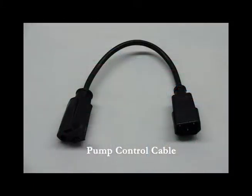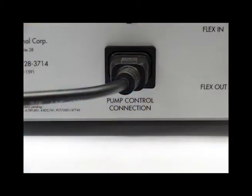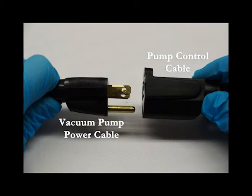To connect the supplied pump control cable, connect the male end to the pump control connection outlet on the back of the flex link controller. The opposite end of the cable connects to the vacuum pump power cable.